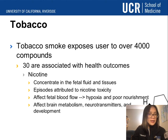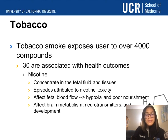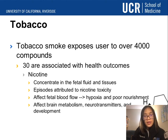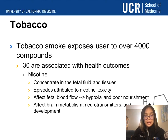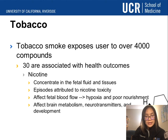In terms of tobacco exposure, tobacco smoke has over 4,000 compounds; 30 are associated with health outcomes, and the most common component we concentrate on is nicotine. It is found in fetal fluid and tissues, and there are episodes we can attribute to nicotine toxicity. We know it affects fetal blood flow because we can trace hypoxia and poor nourishment in a fetus, and it can affect brain metabolism, neurotransmitters, and subsequent development.